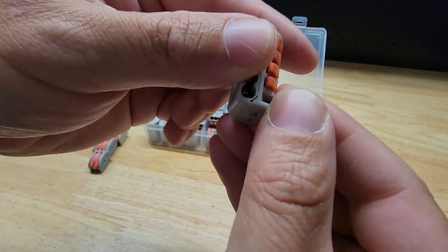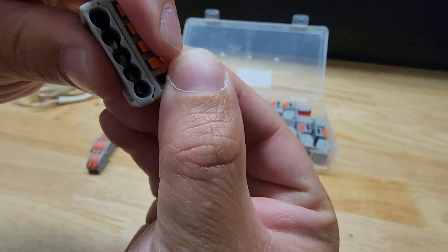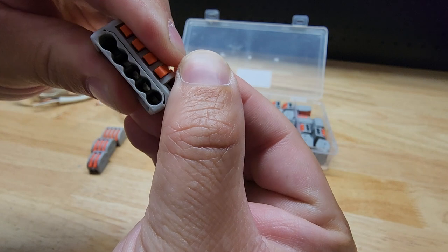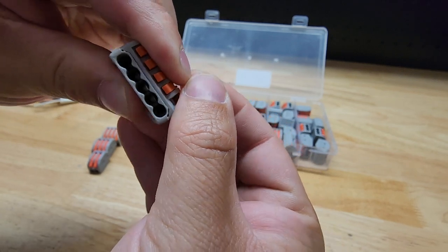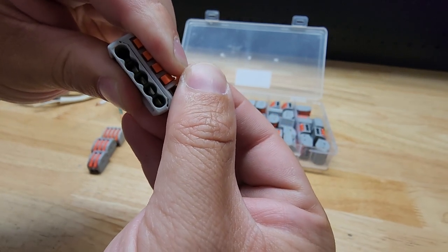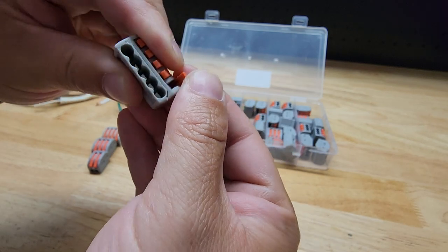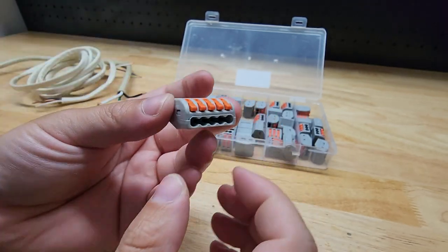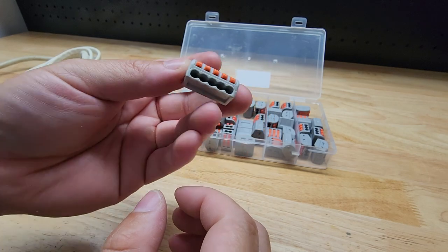Let's see if we can give you a view. See how the reflection comes and goes on that right one? Anyway, it's like a spring-loaded blade that holds the wire in place.